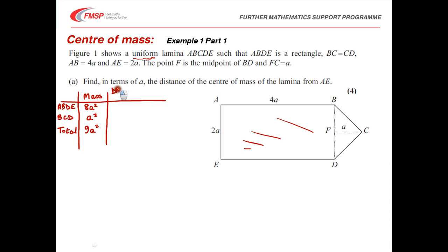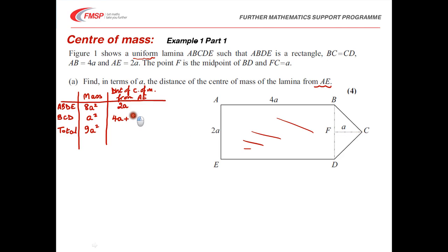The next column is the distance of the centre of mass of each object from the axis — we're looking at the distance from AE. For the rectangle, that's 2a, halfway across the lamina. For triangle BCD, it's 4a — all the way across the rectangle — plus a third of the height of the isosceles triangle, which is a/3, giving 13a/3. For the total, we call that x̄.